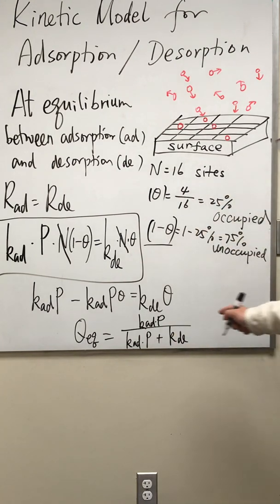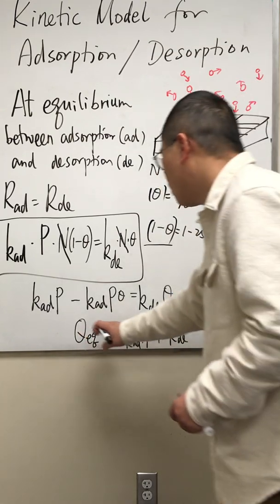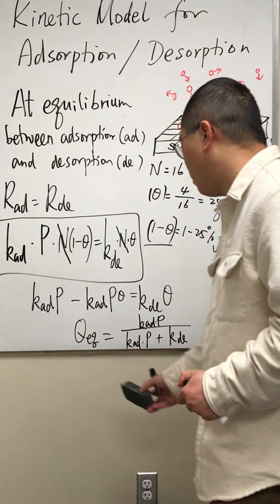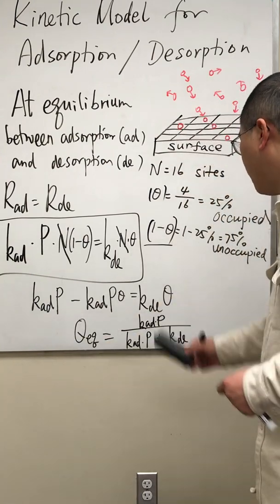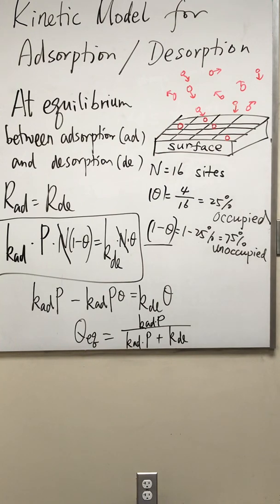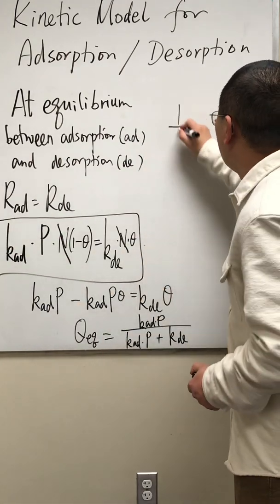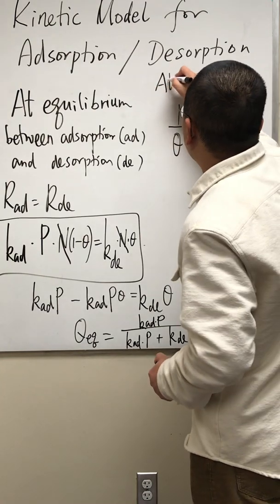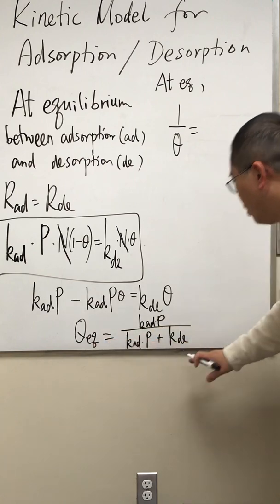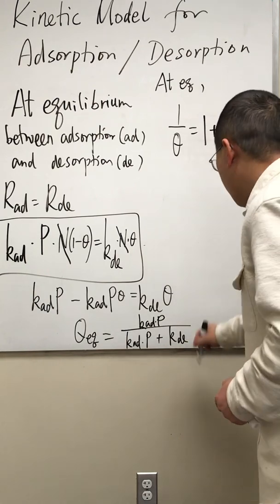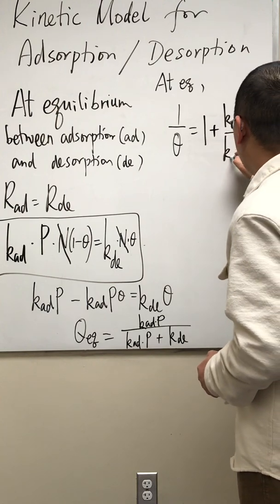We can tell from this expression, this equilibrium percentage of occupied sites is always less than one and always greater than zero. Suppose we have experimental data of this theta and this P, how can we analyze this data? Again, we have to take the reciprocal of both sides. So one over theta is equal to at equilibrium, one over theta is actually this divided by this, that's just one plus K_DE over K_AD times P.